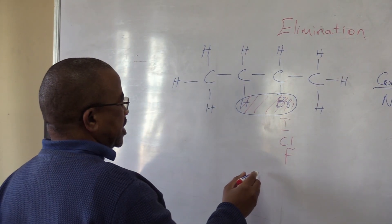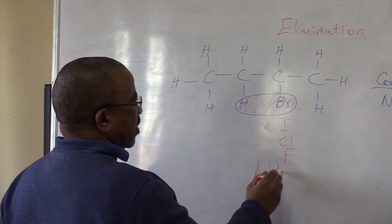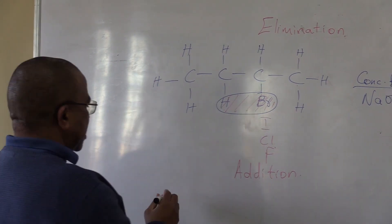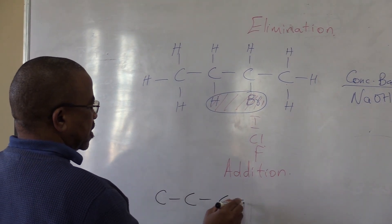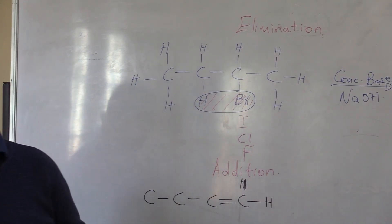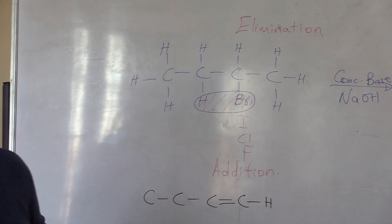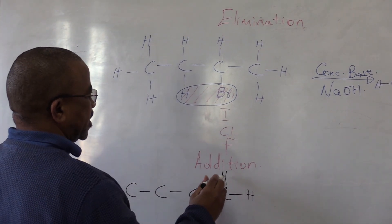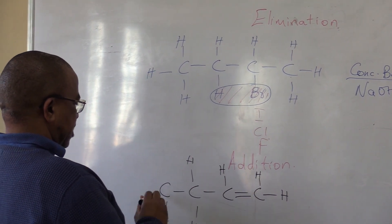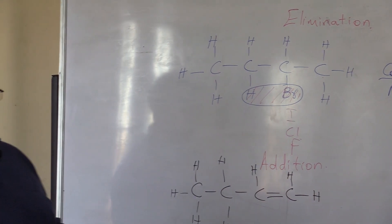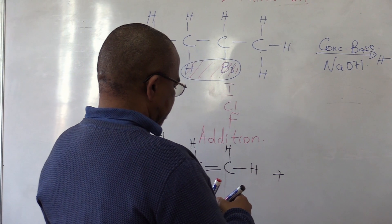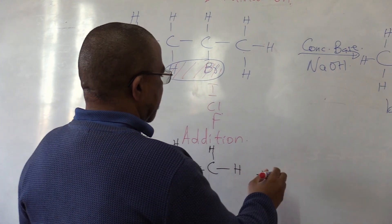Elimination. Now, what if we consider addition? You must look at the difference. Let's say we have a double bond with hydrogens — a simple alkene structure. Then it reacts with HPR, hydrogen bromide.